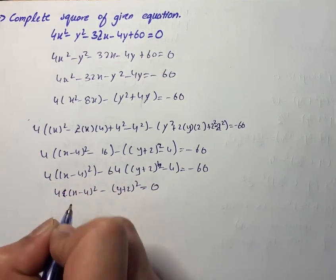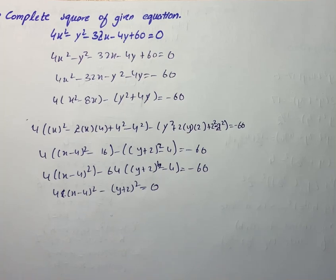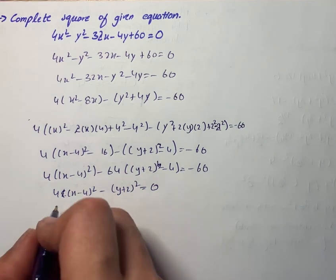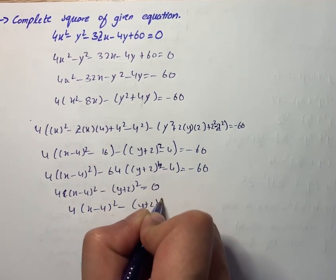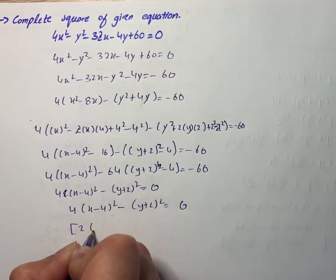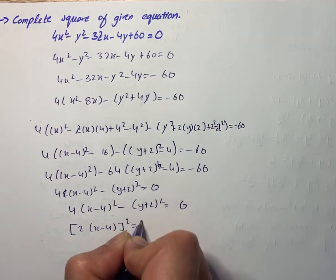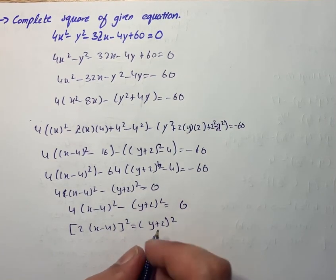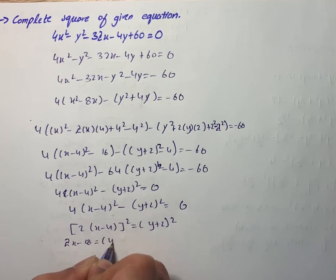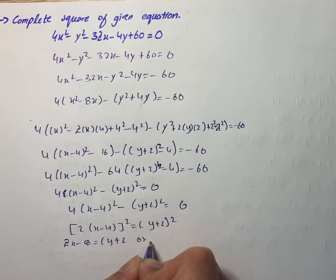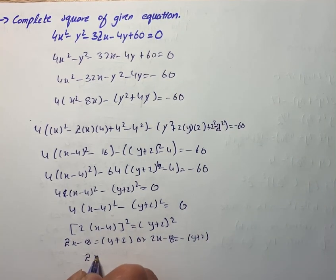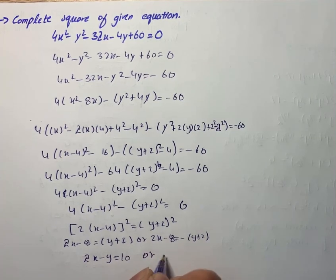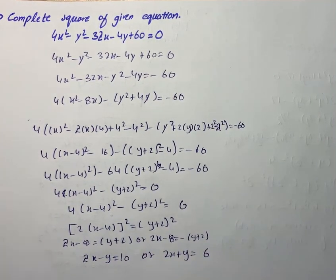From here the equations of the lines are given by factoring: 4(x−4)² − (y+2)² = 0, so [2(x−4)]² = (y+2)², giving 2(x−4) = (y+2) or 2(x−4) = −(y+2). This turns out to be 2x − y = 10 or 2x + y = 6. That is our solution for the given question.